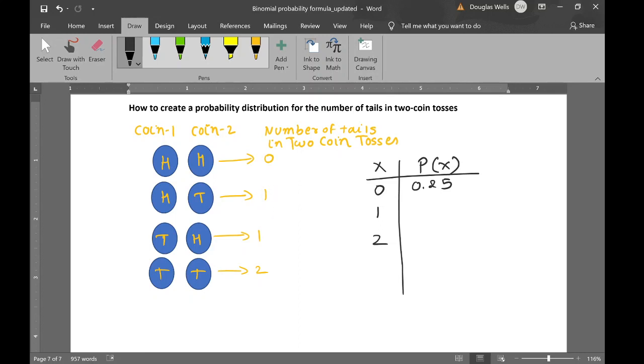One tail showed up two out of four times, so that means it's 0.50. And two tails showed up one out of four times, so it's 0.25 again.